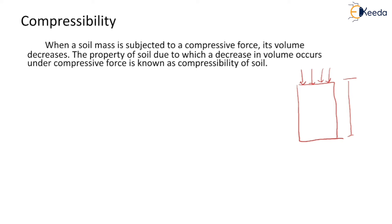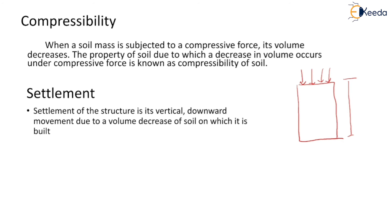Now the second concept is settlement. The settlement of the structure is its vertical downward movement due to a volume decrease of soil on which it is built. Suppose a structure is built on the soil. When the soil gets compressed, its vertical dimension will get reduced, and the structure lying on the soil will also move in the downward direction. This phenomenon is called settlement of the structure.